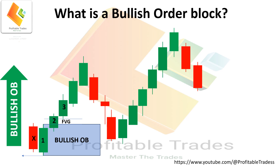Let's see another example of a bullish order block for better understanding. Applying both rules as previously — candle one has taken the low of candle Y, so rule number one is fine. But there isn't any gap between candle one and candle three.